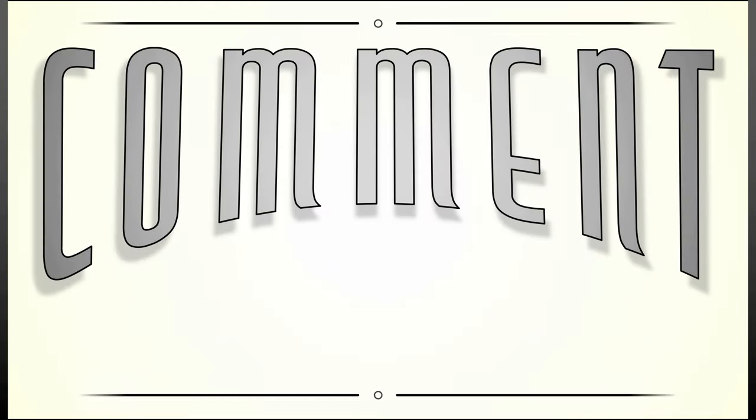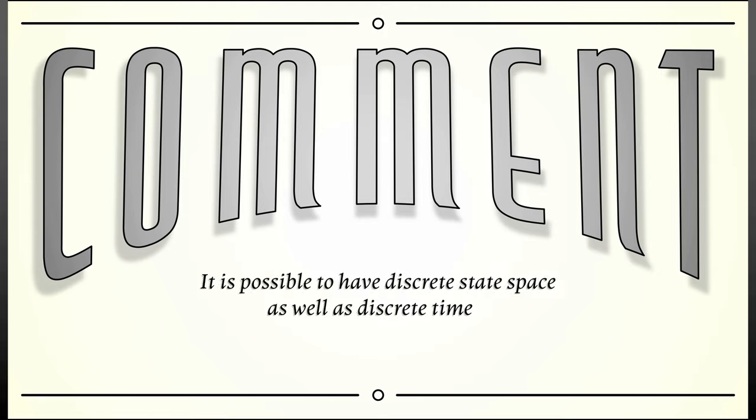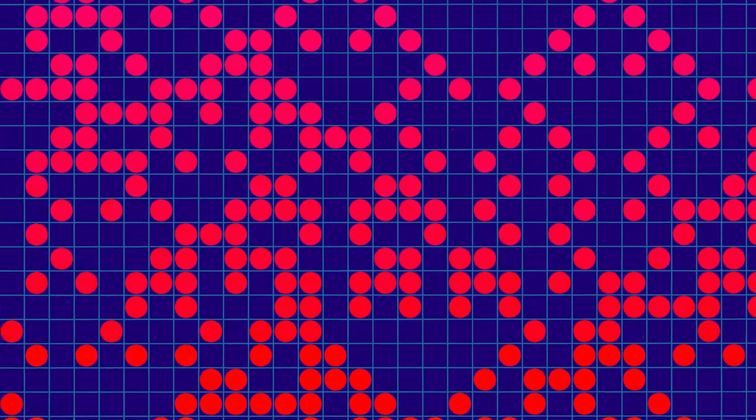Now, I'd like to make one more side comment, namely that it's possible to have discrete state spaces as well as discrete time. Spaces with a discrete topology show up, for example, in cellular automata. These are systems that evolve in discrete space and time, but we're not going to go there.